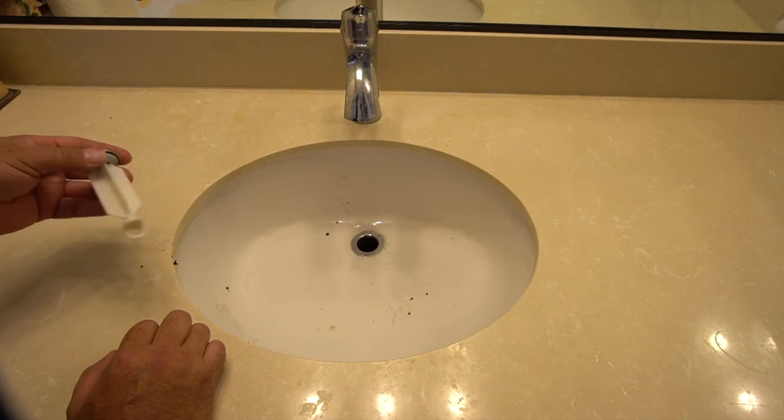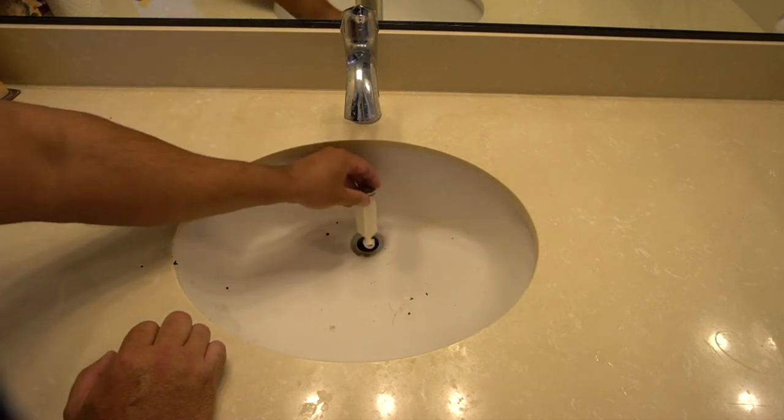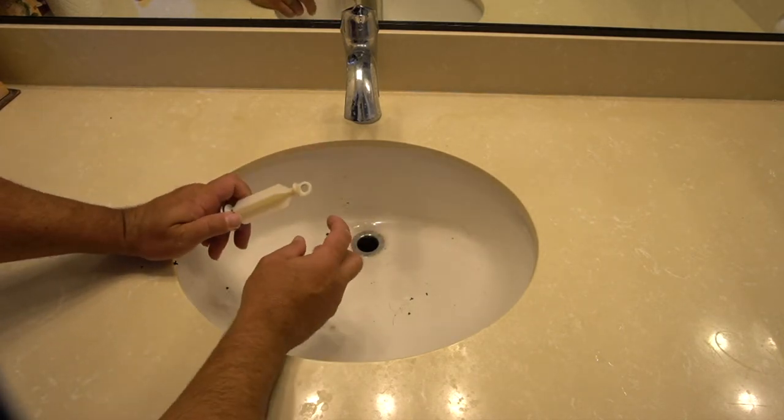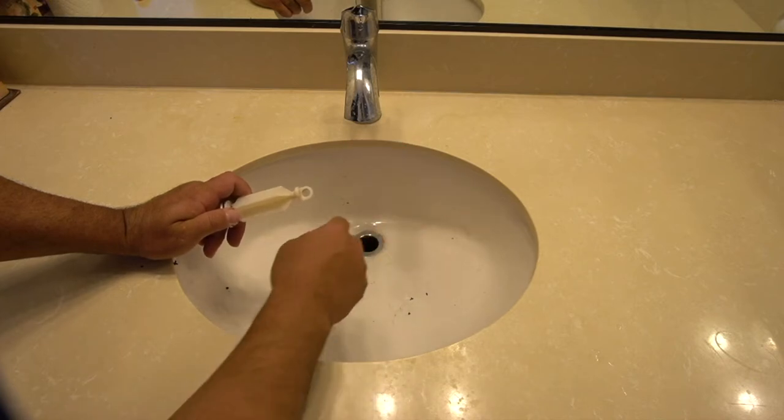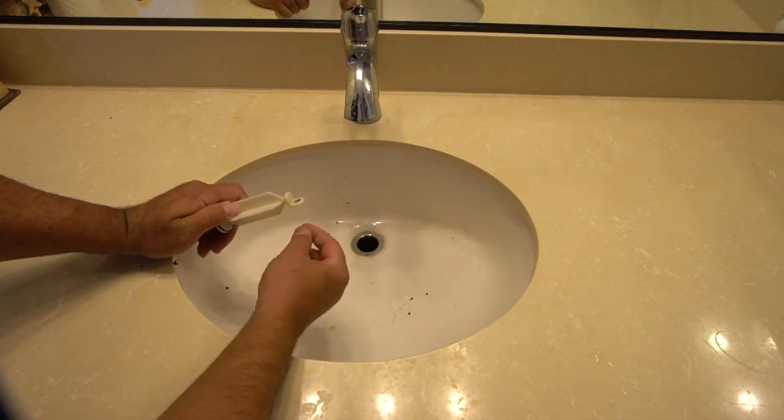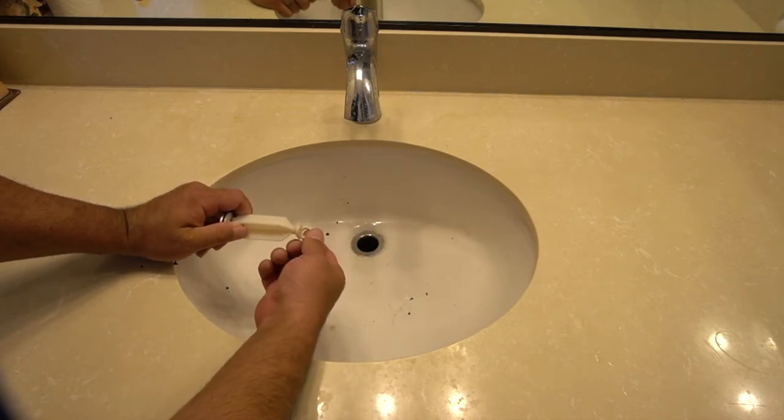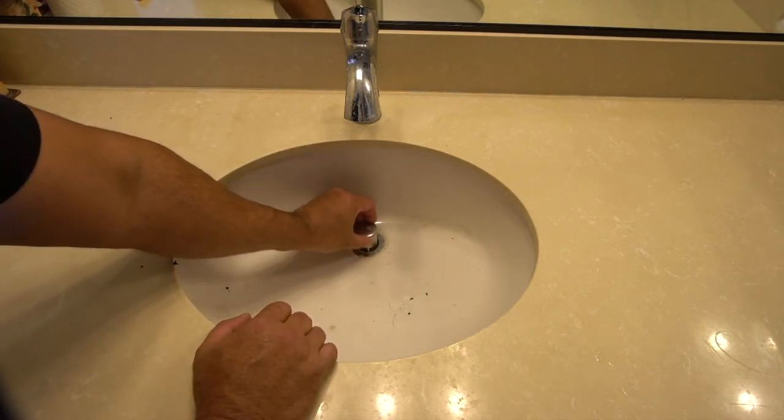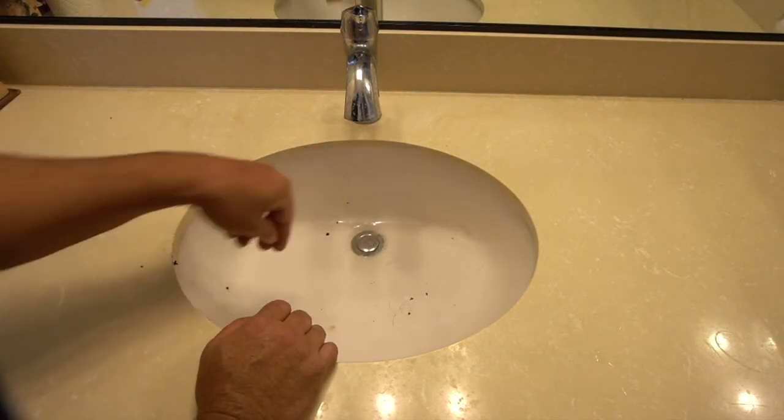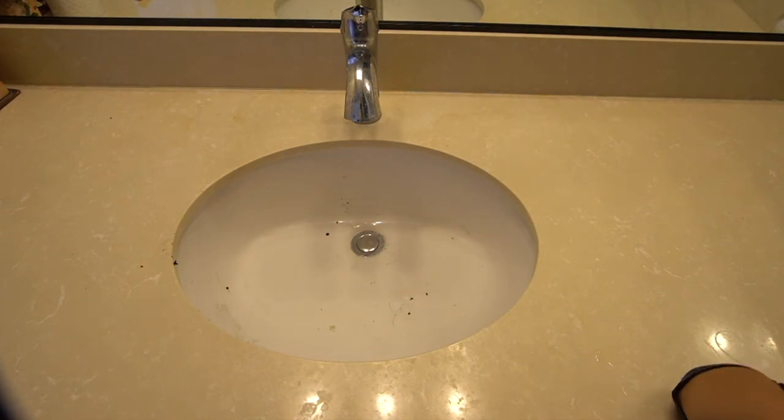Now that we have the sink cleaned out, we're going to put the drain plug back in. And on the other end of that ball that we took off underneath the sink, there's a rod that sticks out. And that rod goes through here. So we'll put it in like this. And then we'll put the rod in.